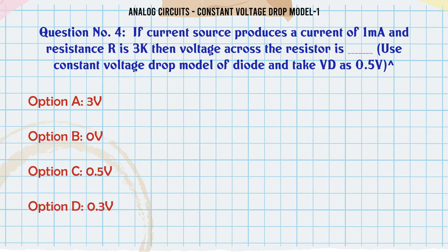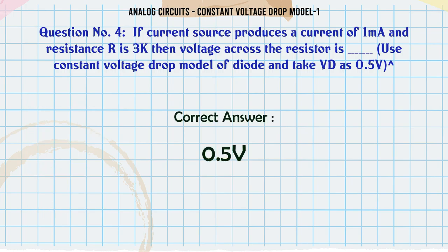The current I through the circuit — use constant voltage drop model of diode and take Vd as 0.5V. Options: A) 3V, B) 0.5V, C) 0.5V, D) 0.3V. The correct answer is 0.5V.